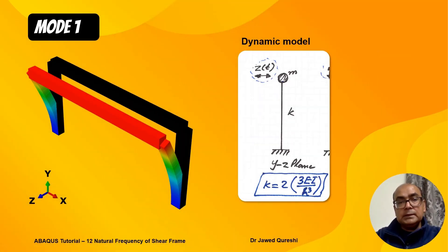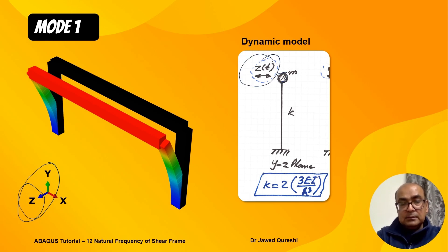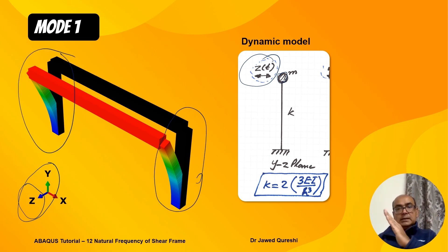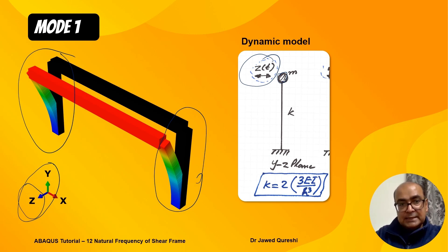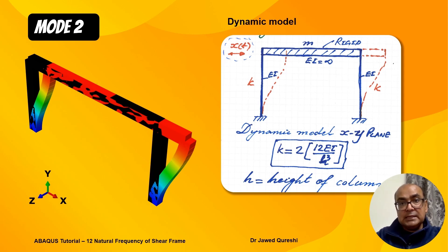For Mode 1, the frame translates in the Z direction. Viewed in the YZ plane, this can be modeled as a vertical cantilever beam with a mass at the top moving in the Z direction. You can see two columns oscillating in Z direction. The formula for a vertical cantilever fixed on one side with a load at the tip gives stiffness as 3EI over L cubed.